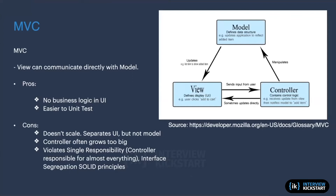Most of the time the model will update the view. For example, when a user taps on a calendar event from the list, the view tells the controller the user wants to see the event detail. The controller asks the model for the event detail, and once the model has it, it gives it to the view. The controller also transitions the user from the list view to the detailed view.